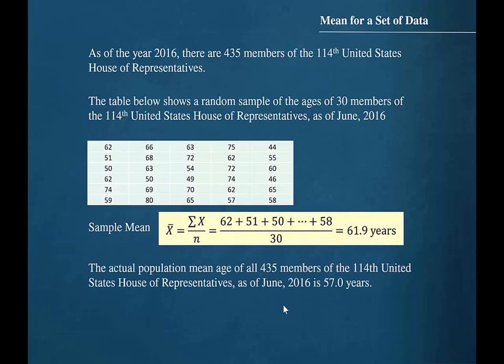The actual population mean age of all 435 members of the 114th United States House of Representatives as of June 2016 is 57.0 years.